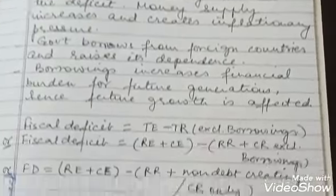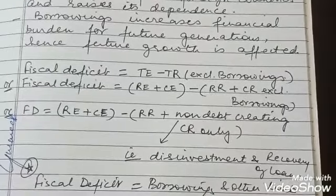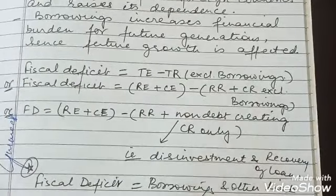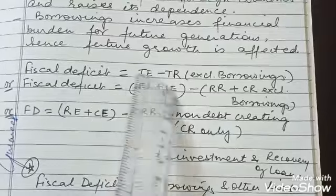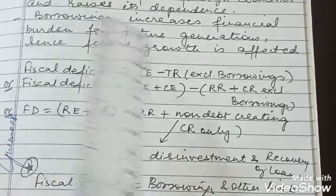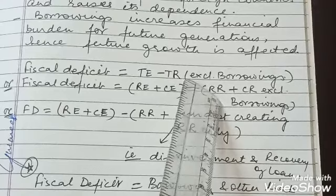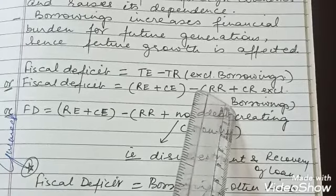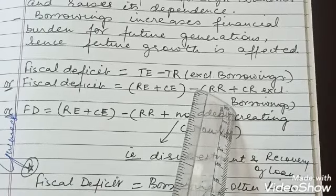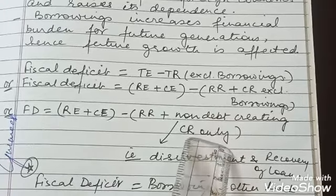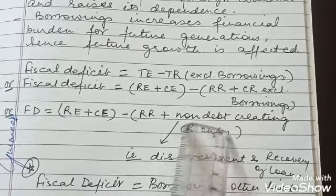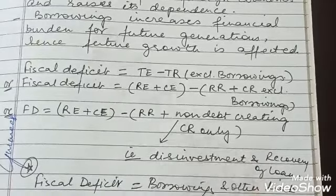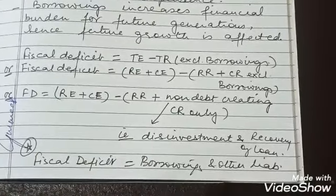Numerically, fiscal deficit equals total expenditure minus total revenue excluding borrowings. Total expenditure includes revenue expenditure plus capital expenditure. Total revenue includes revenue receipts and capital receipts — but from capital receipts we exclude borrowings. There are two types of capital receipts: debt capital receipts and non-debt capital receipts. We only take non-debt capital receipts, which include disinvestment and recovery of loans. So fiscal deficit equals borrowings.